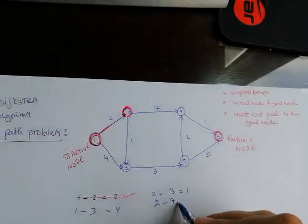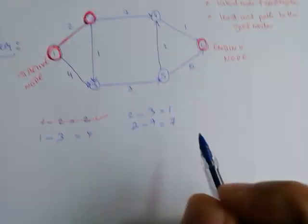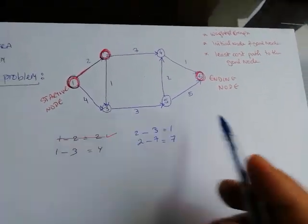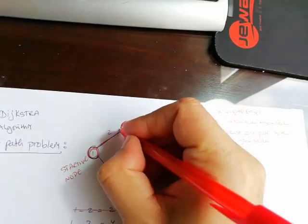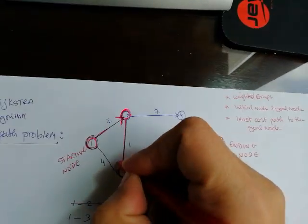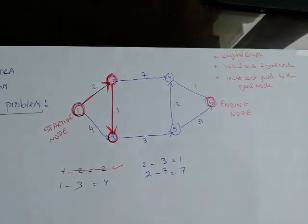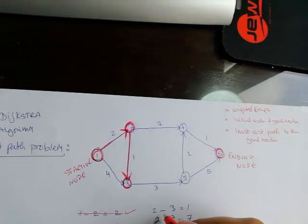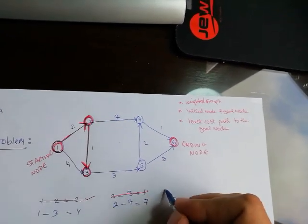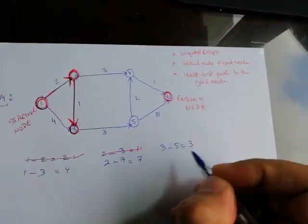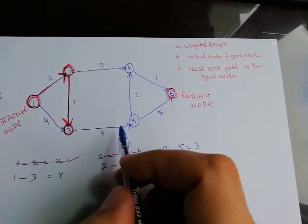This is one and this here is seven. We select the minimum out of all of them, which is definitely two to three, so this is now covered. You always have to remember the direction of the arrows. Then we do three to five, which is three.